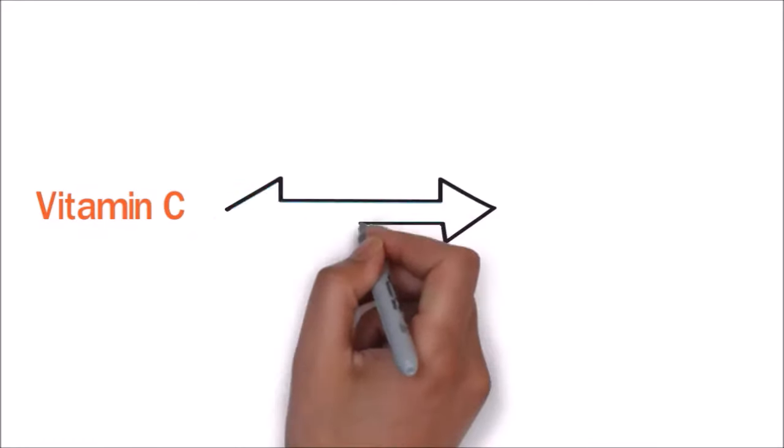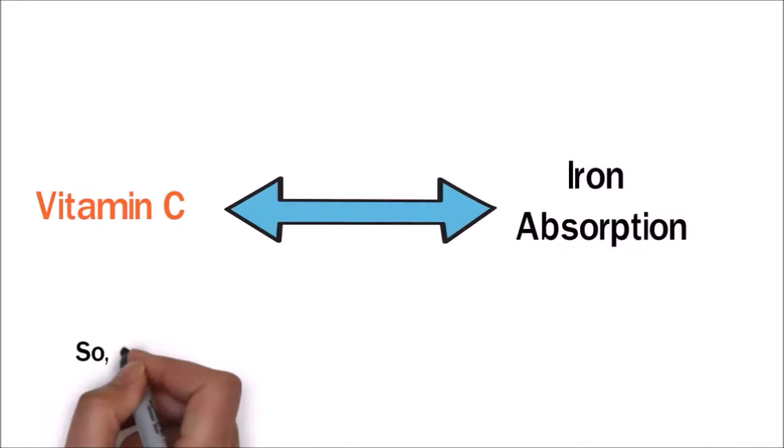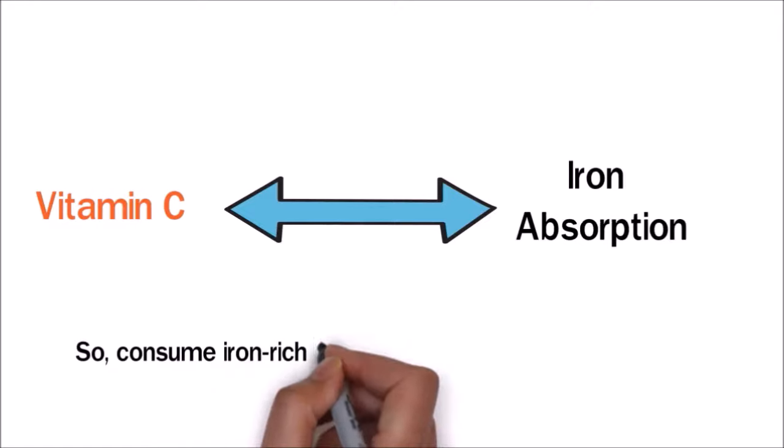Vitamin C helps in iron absorption, so consume iron-rich foods along with vitamin C-rich foods.